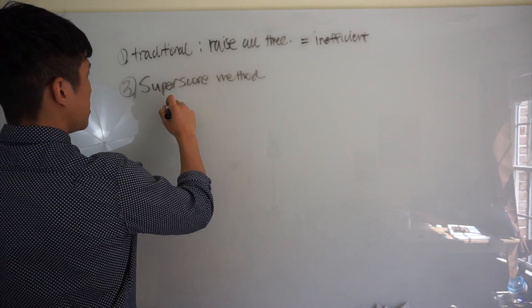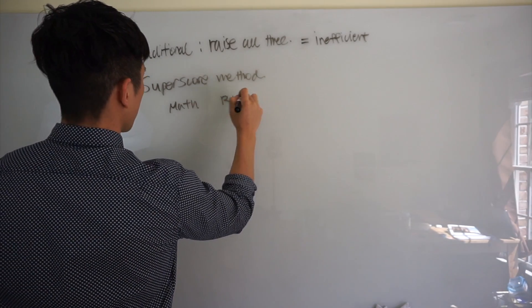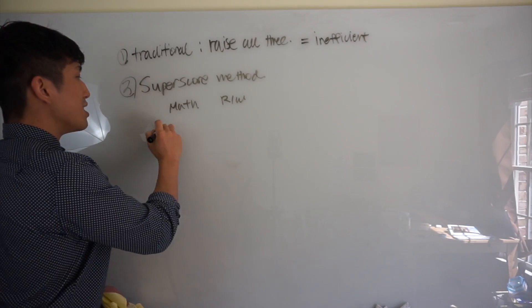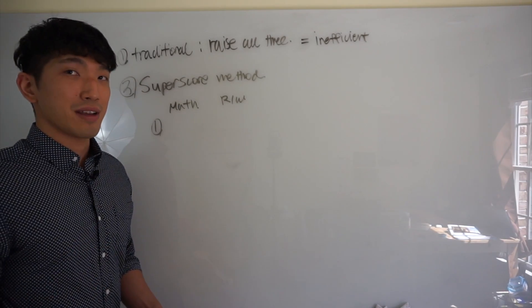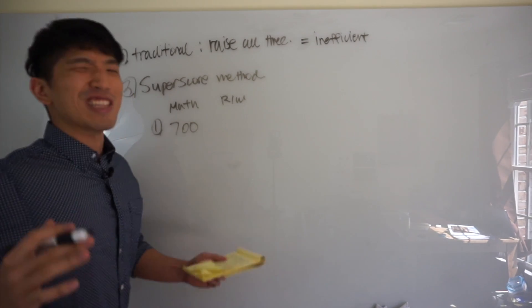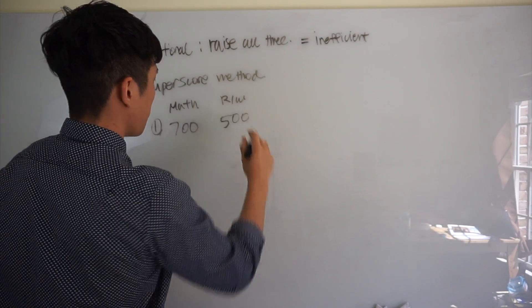So in SAT, there's math section and there's reading and writing section. Let's say you decide to take the exam for the first time and you did really well on math. So let's say you got 700, but you really sucked at reading and writing. So you got maybe 500.